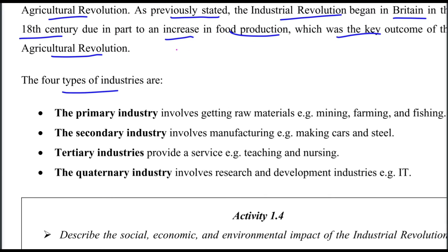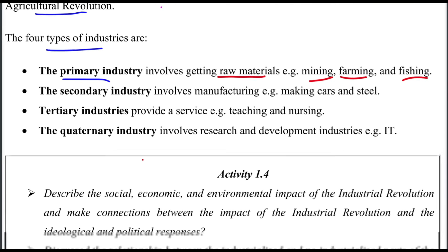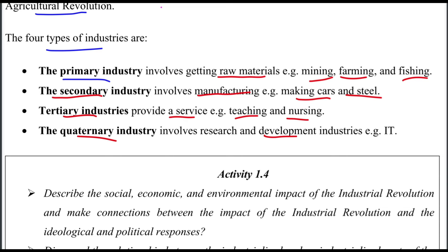There are four types of industries. The primary industry involves getting raw materials such as mining, farming, and fishing. The secondary industry involves manufacturing, such as making cars and steel. The tertiary industry provides services such as teaching and nursing. The quaternary industry involves research and development.